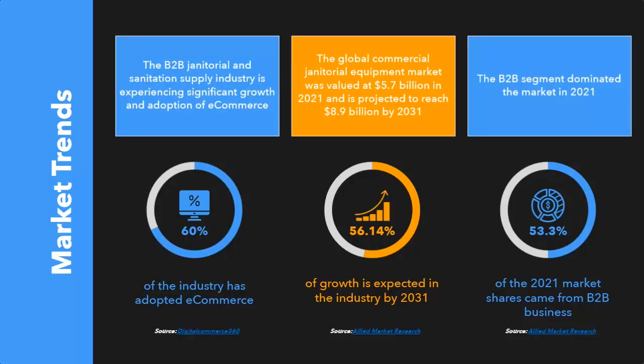If we start looking at the Jansan industry in particular, there's a lot of activity going on — not only in growth but in e-commerce adoption. 60% of the industry within Jansan has adopted some form of e-commerce, whether it's websites, punch-outs, or integrated catalogs. Look at the growth: a 56% increase in commercial janitorial equipment by 2031. The growth is just going to keep going. And where's the lion's share of it coming from? B2B — our space. All of this sets itself up well for having the proper tools enabled to allow you to scale.